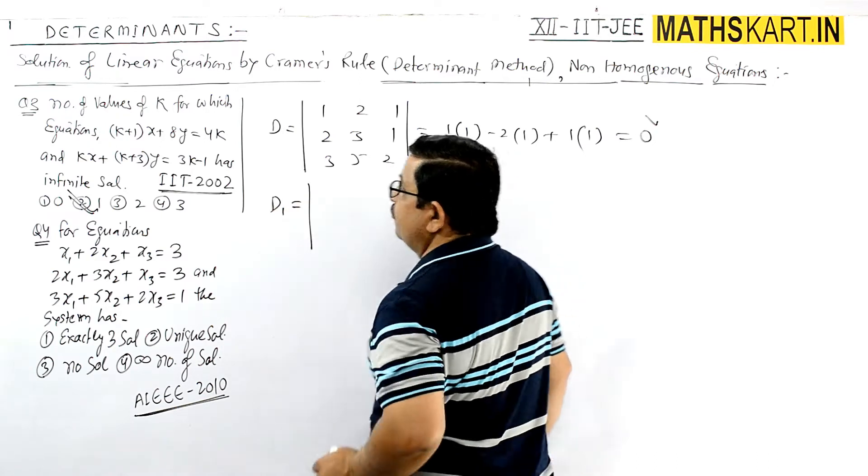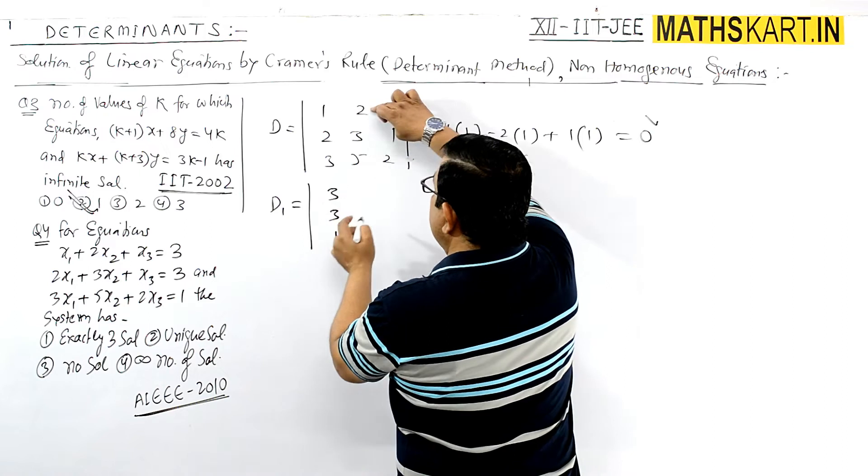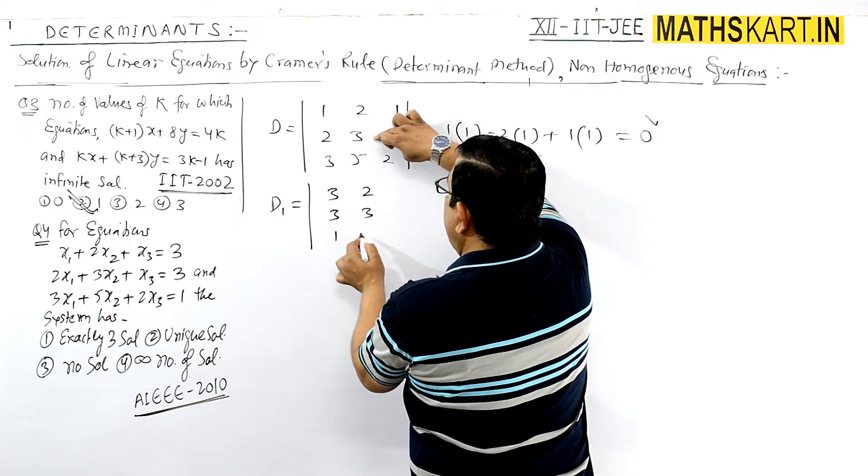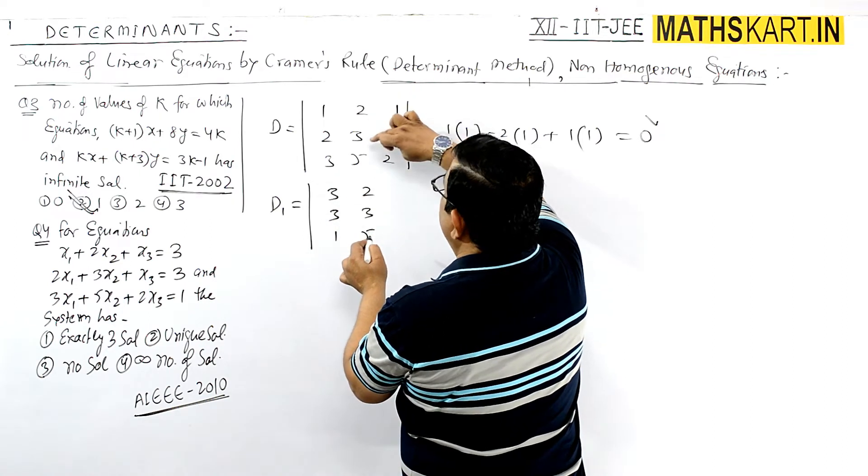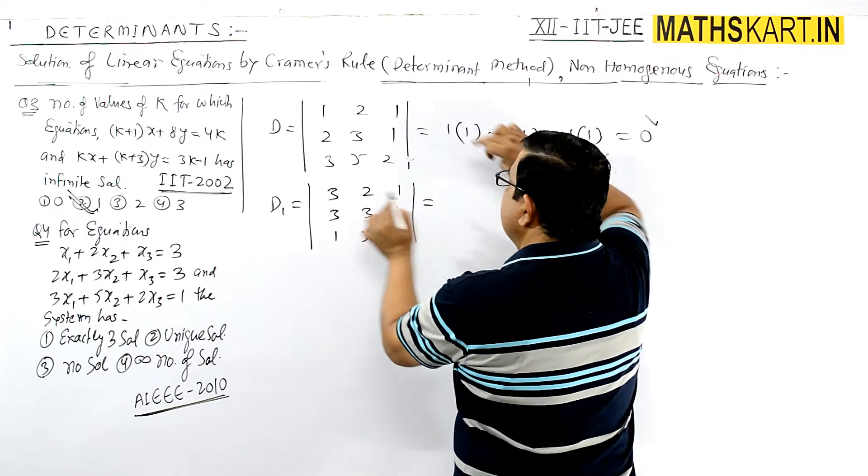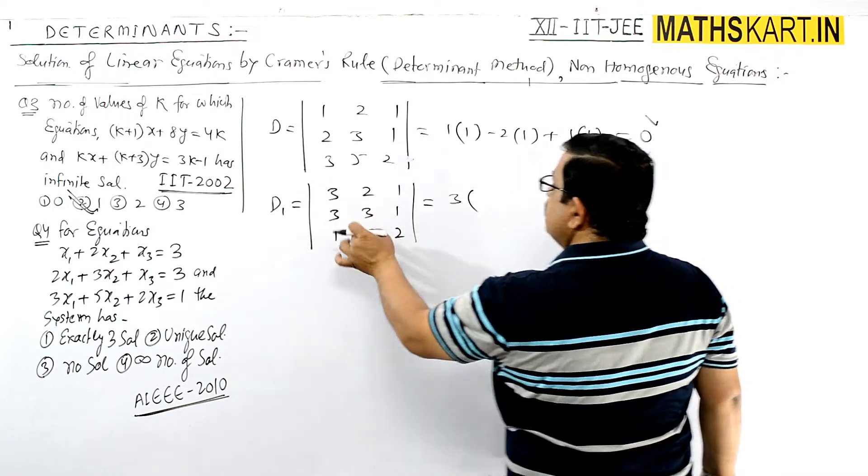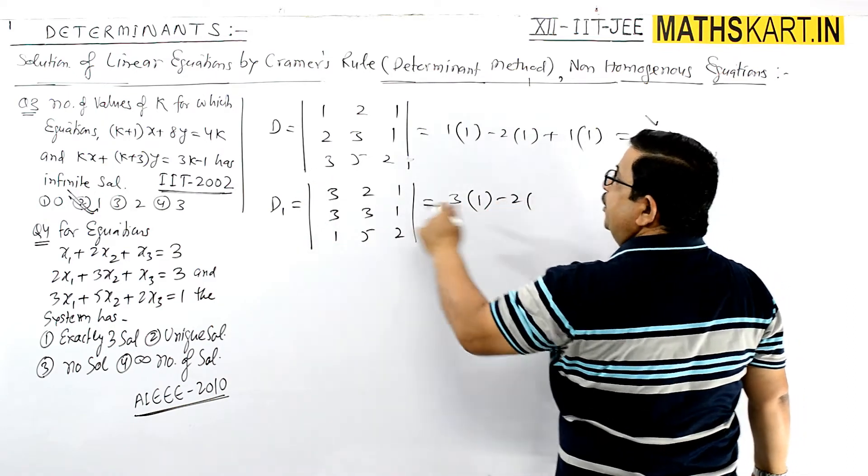For D1, we replace the first column with the constant terms: |3, 2, 1; 3, 3, 1; 1, 5, 2|. Solving this: 3(6-5) - 2(6-1) + 1(15-3).